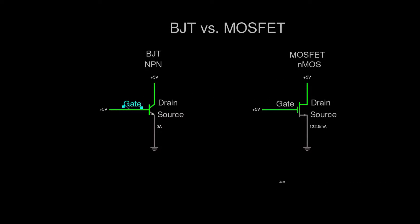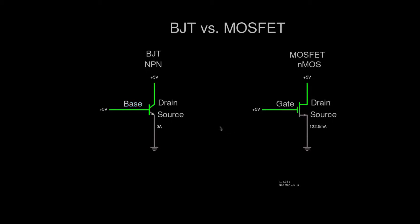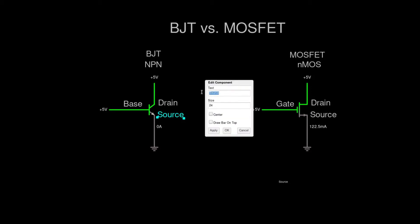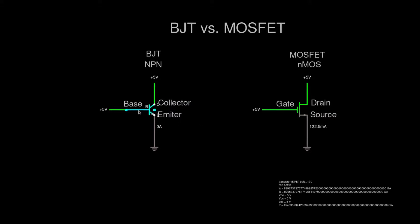First of all, the BJT transistor leads are not called gate, drain, and source, but are base, emitter, and collector. But they act very similarly: base can be looked at as gate, collector can be looked at as drain, and emitter can be looked at as source.